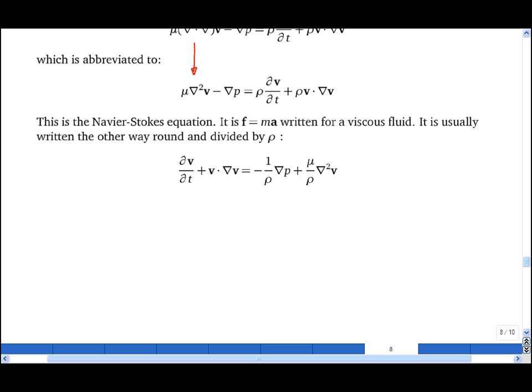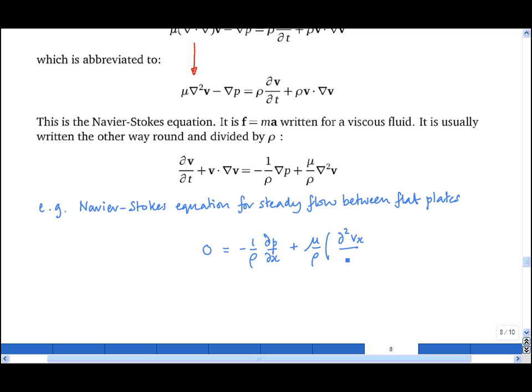That's actually my preferred way of doing it. For example, the Navier-Stokes equation for steady flow between flat plates gives 0 on the left hand side, because there is no acceleration, as shown previously, equal to minus 1 upon rho dp by dx plus mu upon rho d2 vx by dy squared. That's in the x direction.